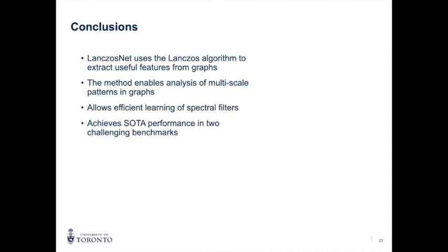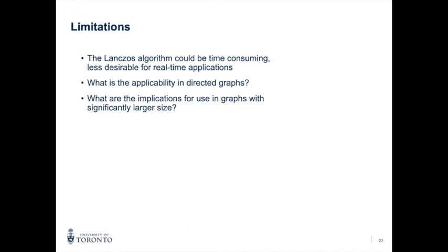To conclude, this architecture takes advantage of an algorithm published 90 years ago. Interestingly, it turns out that this algorithm is very useful to help us extract relevant features from graphs quite efficiently, including multi-scale features by applying spectral filters. And the configuration of all these components make the LanczosNet architecture achieve state-of-the-art results in two challenging benchmarks.